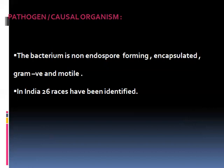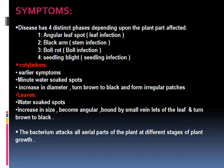In India, 26 races have been identified of this pathogen. The disease has four distinct phases depending upon the plant part affected: Angular Leaf Spot (leaf infection), Black Arm of cotton (stem infection), Boll Rot of cotton (boll infection), and Seedling Blight (seedling infection).